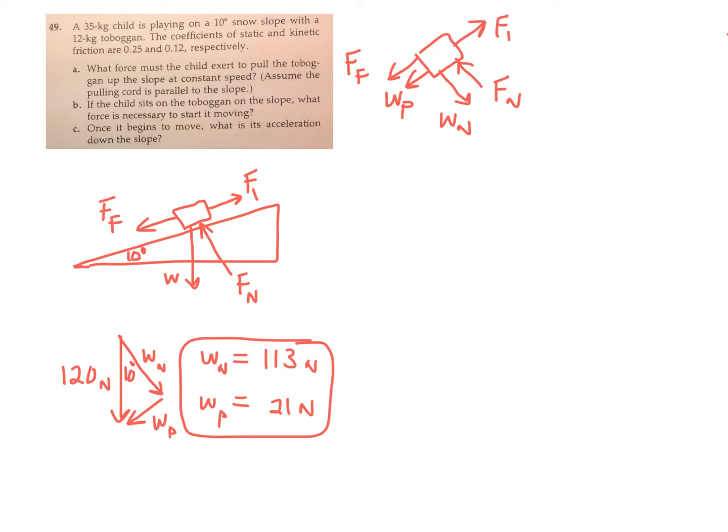W sub n is 113. So F sub n is 113. And W sub p, the parallel component to the ramp, is 21 newtons.